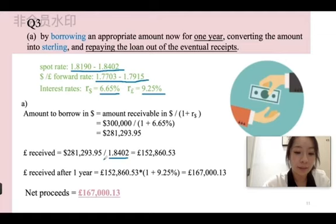This amount is invested at the UK interest rate for one year. Sterling received after one year is equal to £155,816.53 multiplied by 1 plus 9.25%, equal to £167,000.30.